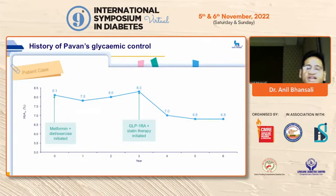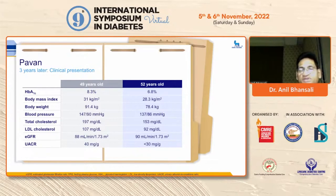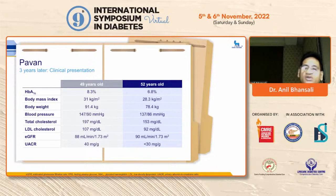Later on, cardiovascular risk factors were targeted and a GLP-1 receptor agonist was added. After three years on GLP-1 therapy, HbA1c dropped below 7%, weight was reduced by 13 kg, blood pressure normalized, ACR returned to normal, and eGFR and LDL cholesterol improved. Targeting the obesity component early, which is an important risk factor for many comorbidities, allows you to overcome the emergence of complications.